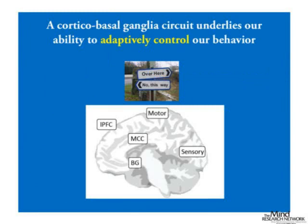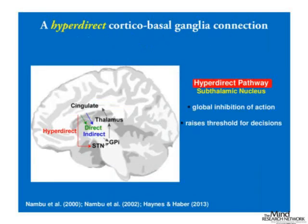Let's go back to the bigger picture — how the brain adapts behavior. Why might you want to initiate a decision threshold increase, a speed-accuracy trade-off of slowing down to become more accurate? Well, there's a lot of things in life that are difficult, conflicting, error-prone, or you want to be cautious about. We know brain systems, largely including the mid-cingulate cortex and basal ganglia, underlie this ability to adaptively adjust your behavior on a rapid basis.